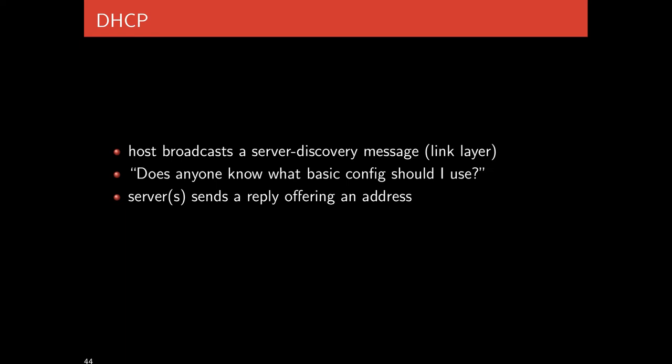With DHCP, the host broadcasts a server discovery message at the link layer — meaning devices that can directly communicate with each other. It's not an IP packet; it's just a server discovery message broadcast to the local subnet, basically asking: does anyone know what basic configuration I should use? Then the server replies — or possibly more than one server replies, or possibly a server and possibly an Eve — offering information about how to configure your device, including what your IP address should be.